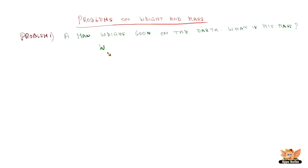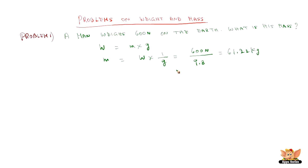We know that weight is M into G. So M is equal to weight into 1 by G. Weight is 600 Newton and G is 9.8 meters per second square, which gives rise to 61.22 kg.